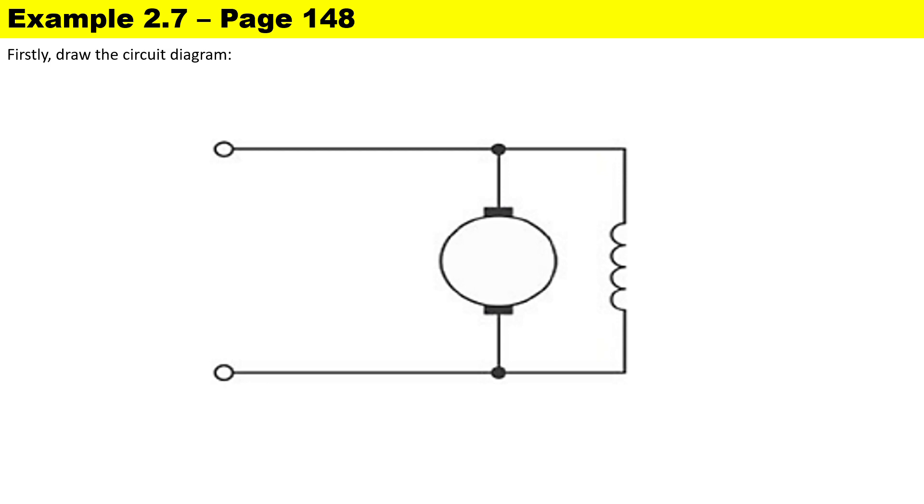Now before we look at the questions, the first thing we need to do is to draw our circuit diagram. Most importantly, this is a generator and the field winding is in parallel to the armature. Because it's a generator, it is supplying electrical load, therefore it is producing armature current and a small amount of current goes through the shunt winding.